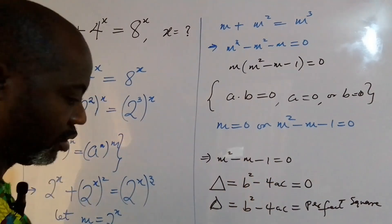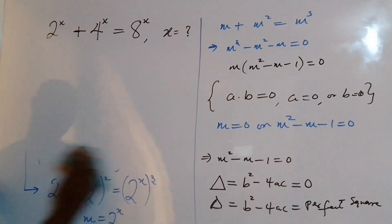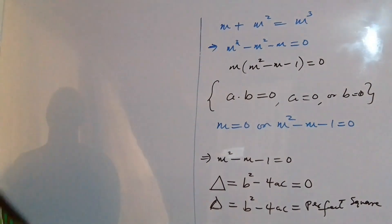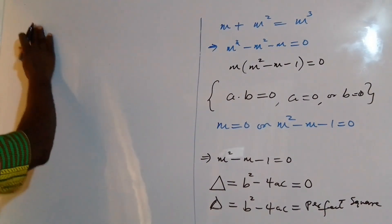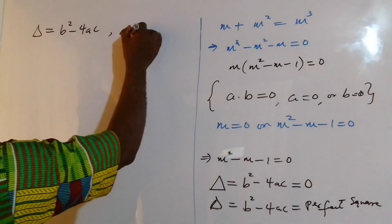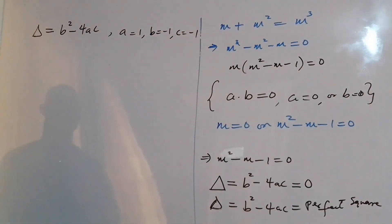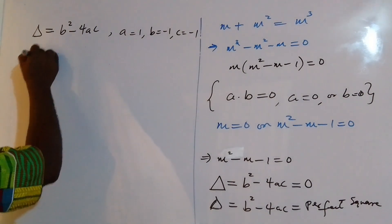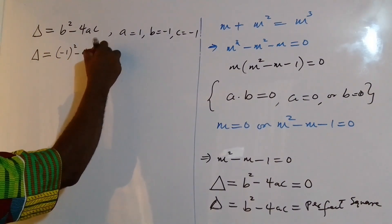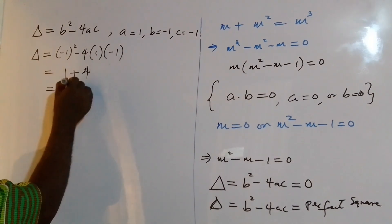Let's check which condition is satisfied. We find delta equals b squared minus 4ac, where a equals 1, b equals negative 1, and c equals negative 1. So delta equals negative 1 squared minus 4 times 1 times negative 1, which gives us 1 plus 4, and that equals 5.